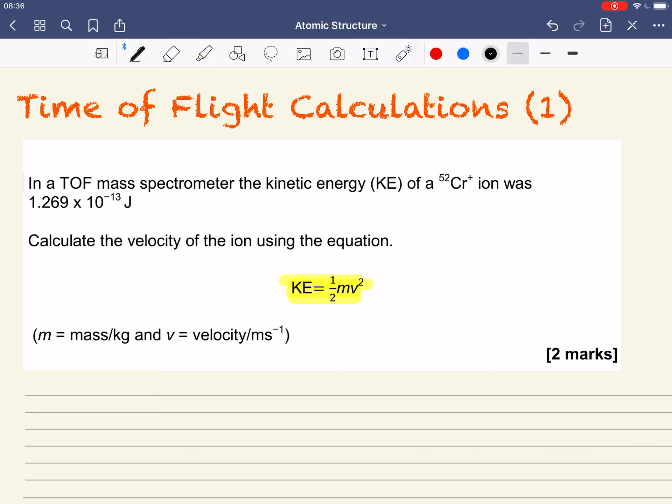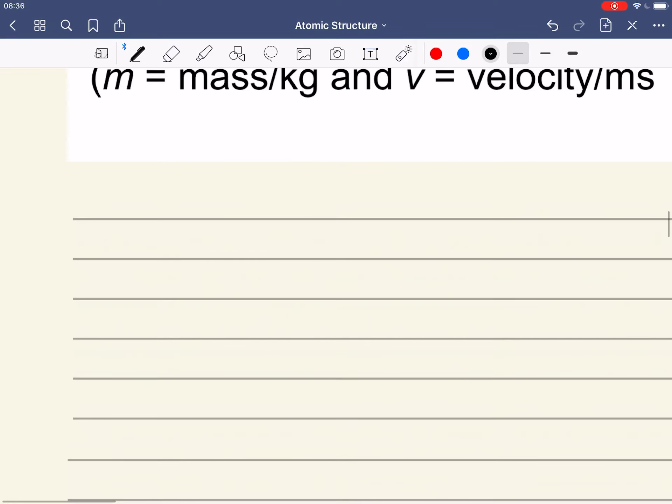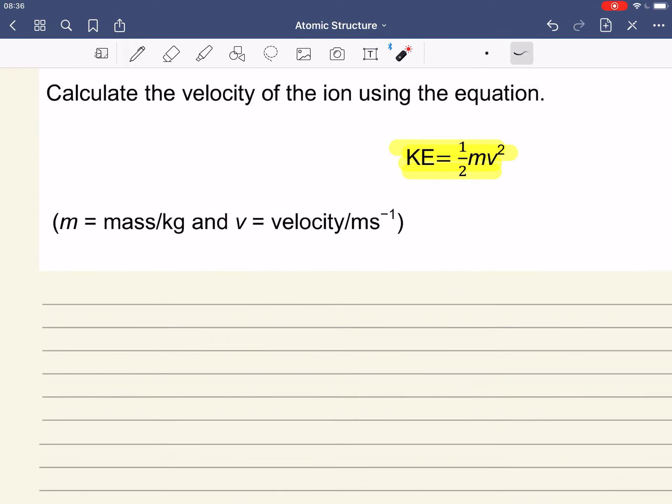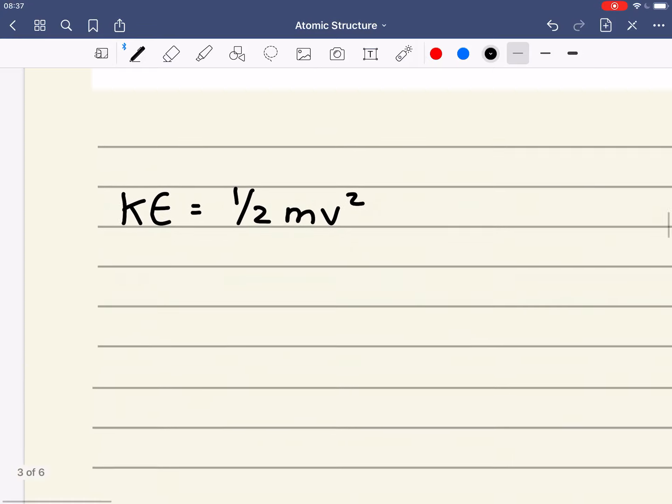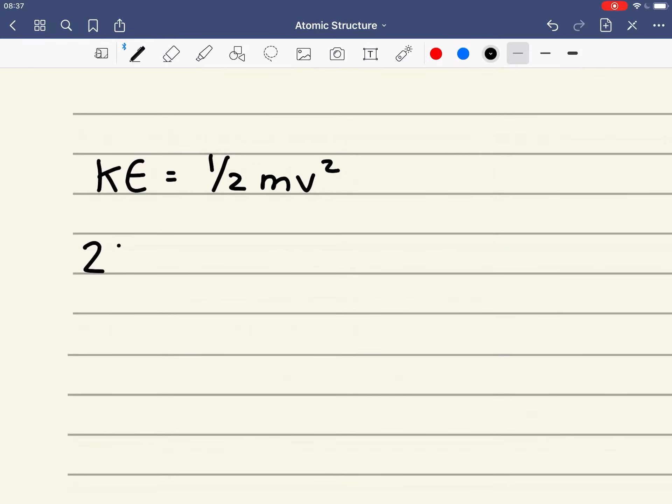What we've got to do then is we've got to work out velocity. So we've got to rearrange this equation here in order to get velocity. So kinetic energy is equal to half mass velocity squared. Now the first thing I'm going to do is I'm going to multiply both sides by 2. And that gives us the following.